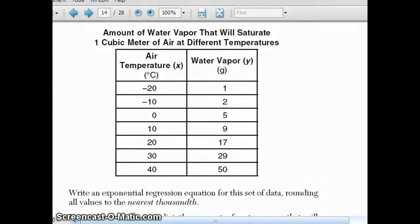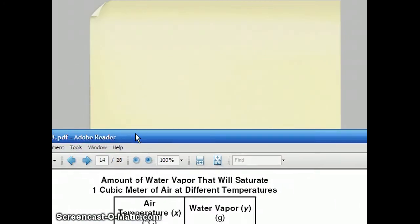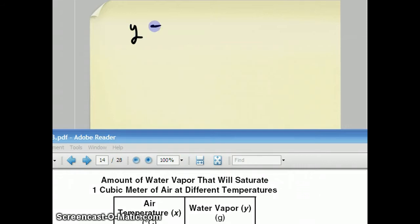And I'll write down the equation that I got and it says to round to the nearest thousandth. So the equation that I got is y equals 4.193. Actually it's got to be rounded to the nearest thousandth.